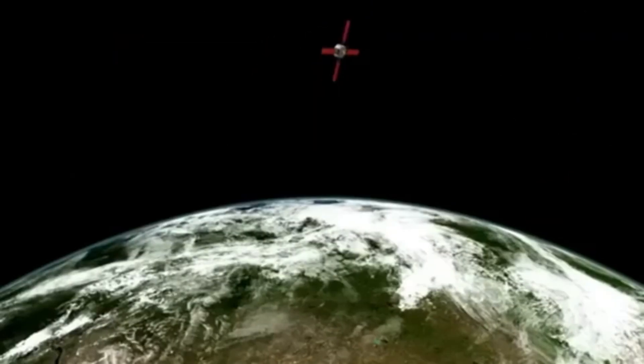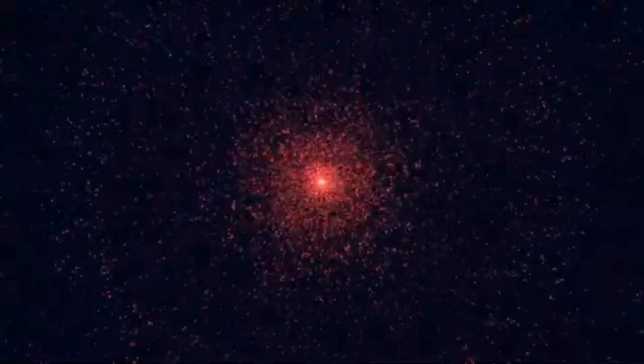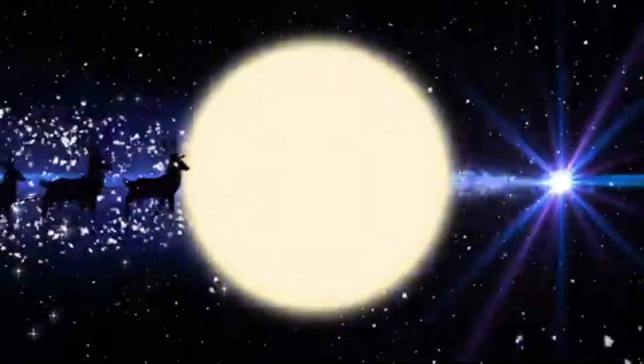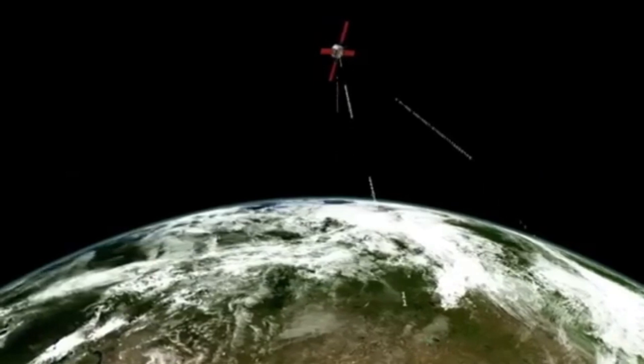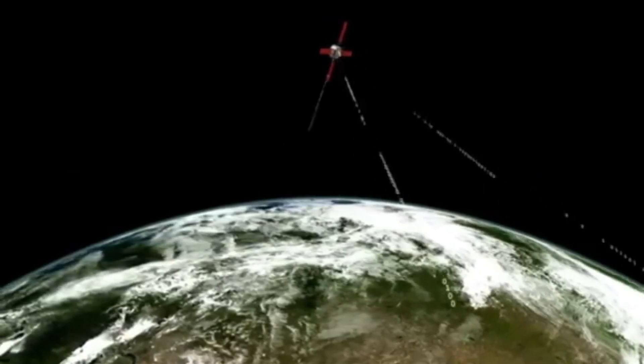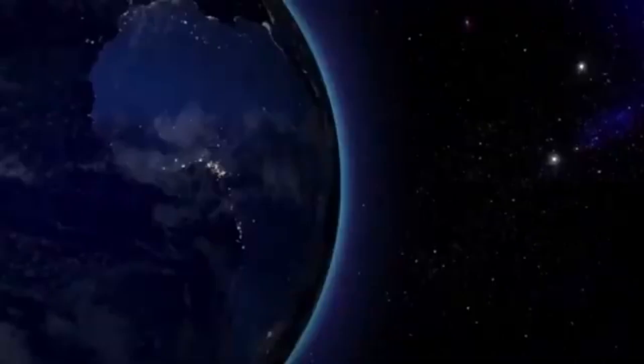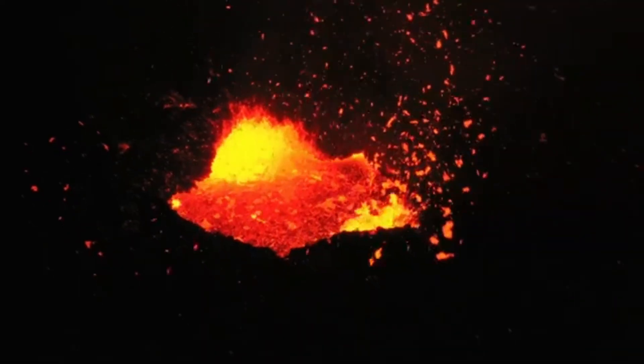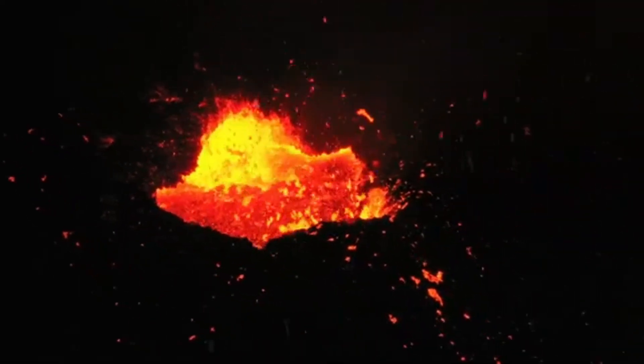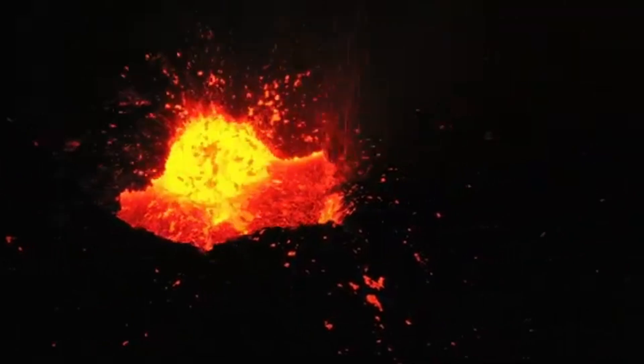Betelgeuse isn't just any star. It's a red supergiant, a behemoth so vast that if you plopped it where our sun sits, it would swallow Mercury, Venus, Earth, and even Mars in one gulp. Its diameter is roughly 764 times that of our sun, a scale that's hard to wrap your mind around. Picture a beach ball next to a grain of sand. That's our sun compared to Betelgeuse.